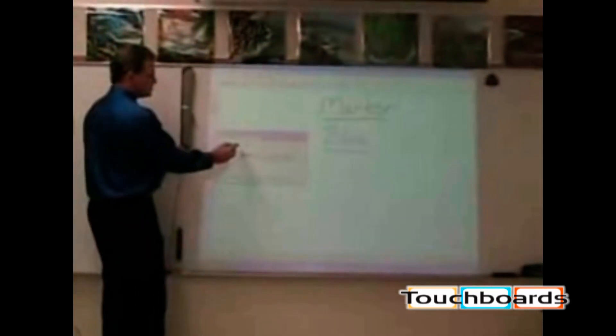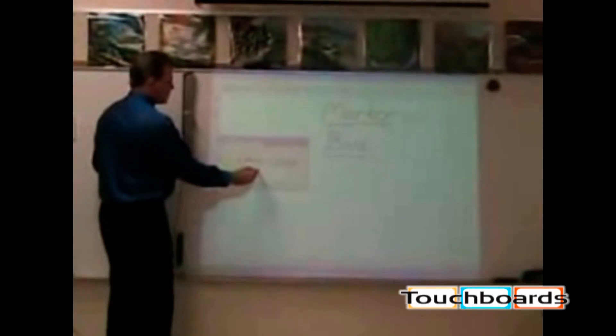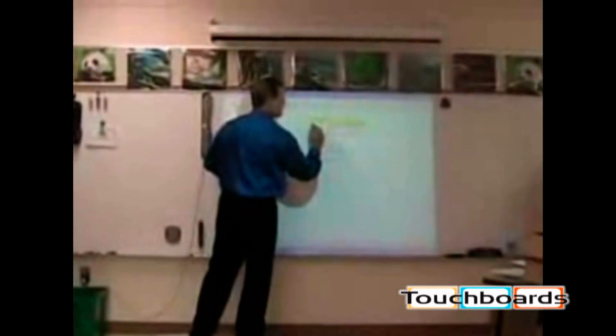In order to change tools, simply touch the tool that you want to use. For example, right here, we're using the highlighter tool. We can now digitally highlight information anywhere on the board's surface. Should we need to erase, it's also very easy to accomplish.